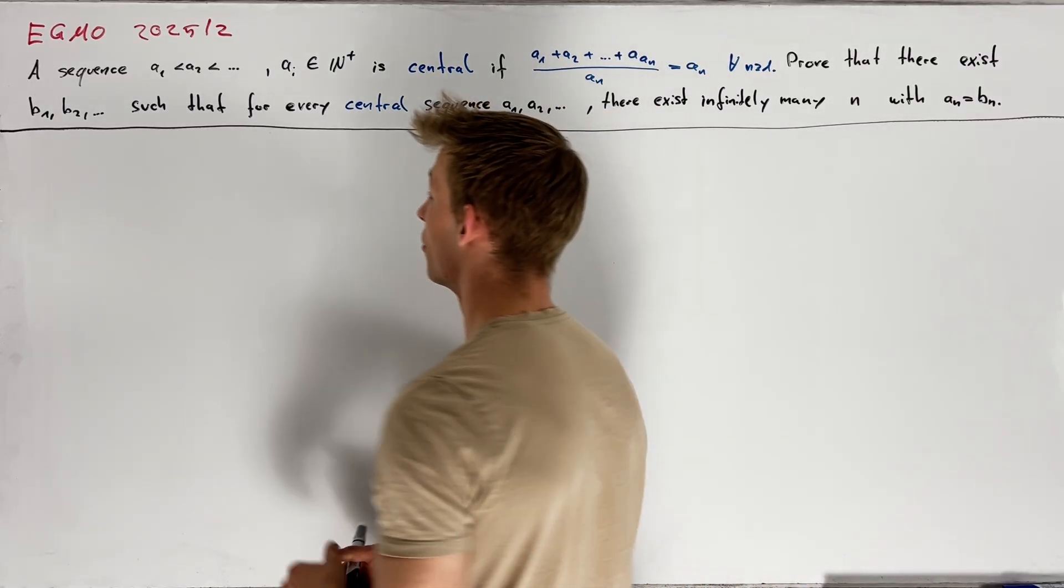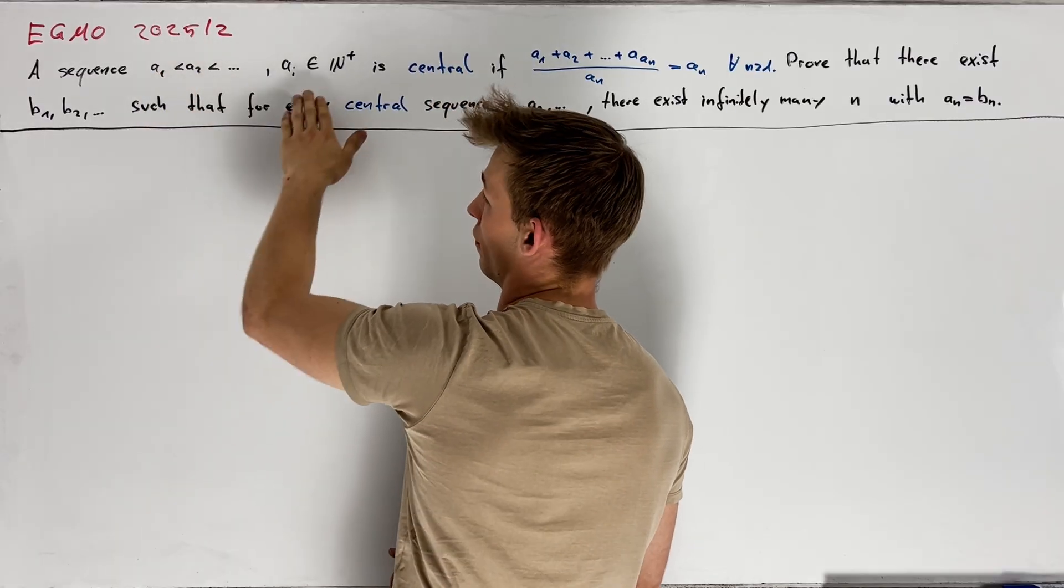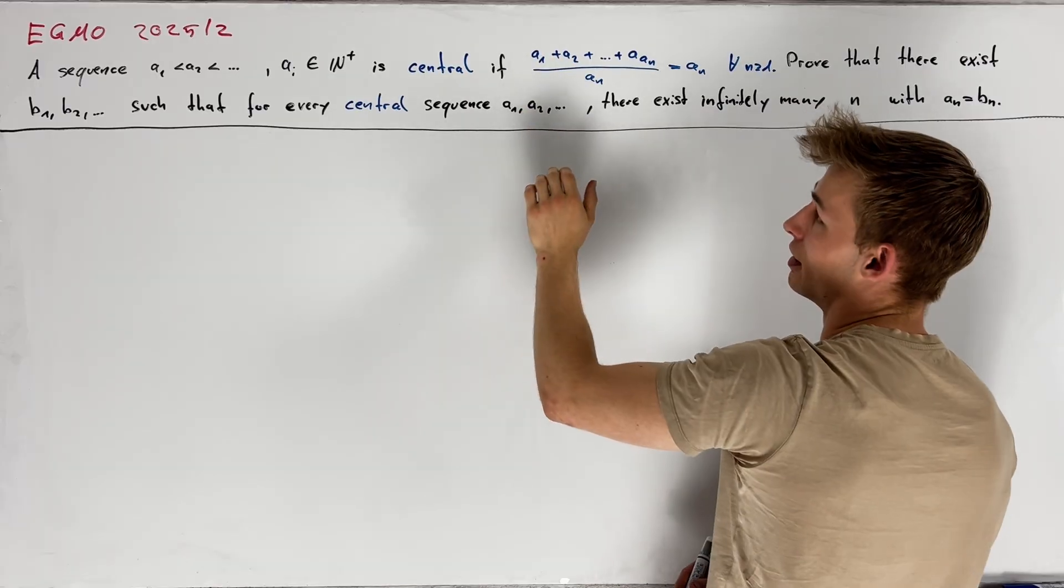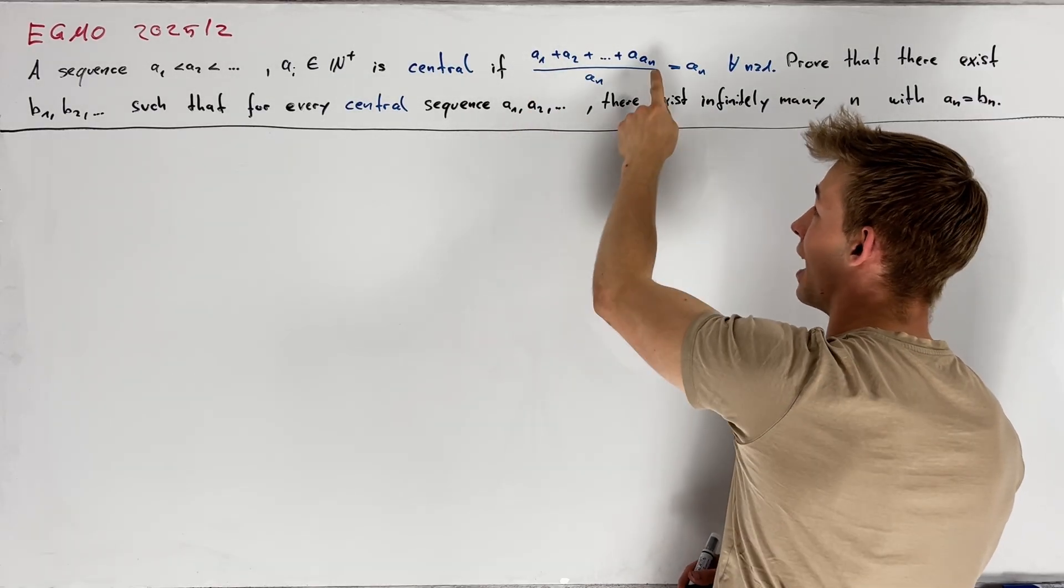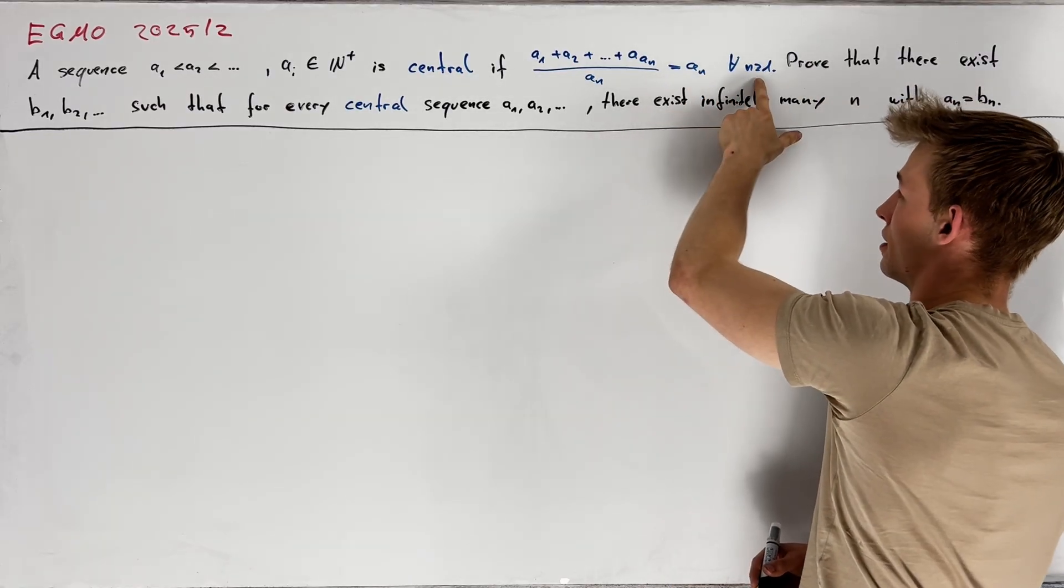At first we want to say that a sequence a1 less than a2 and so on of positive integers is central if the average value of the elements from a1 up to an is equal to an for all n greater than or equal to 1.